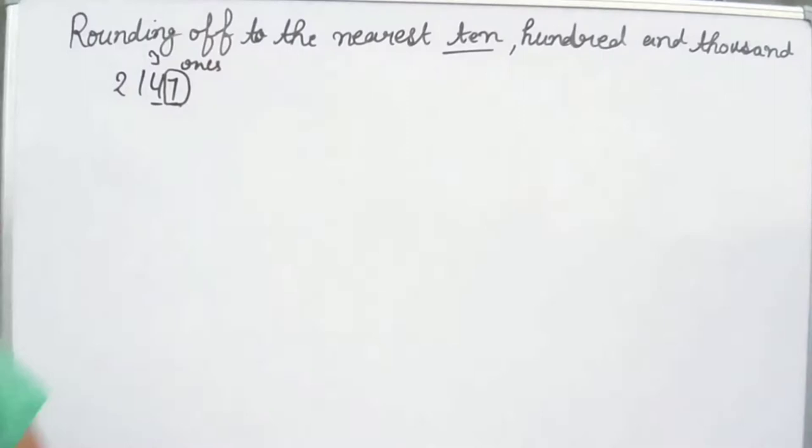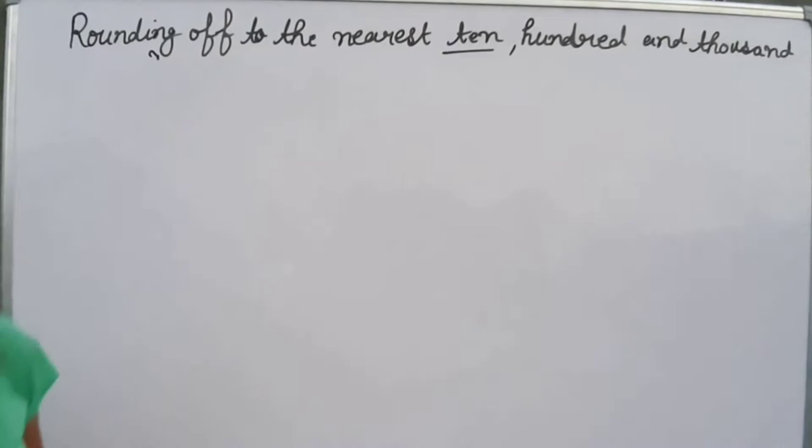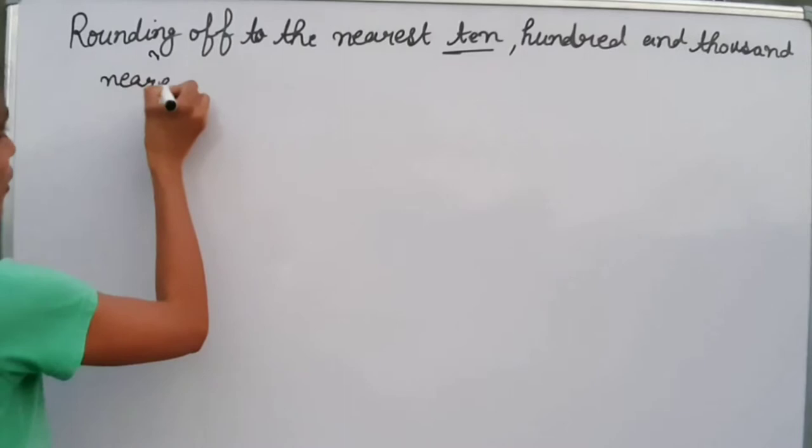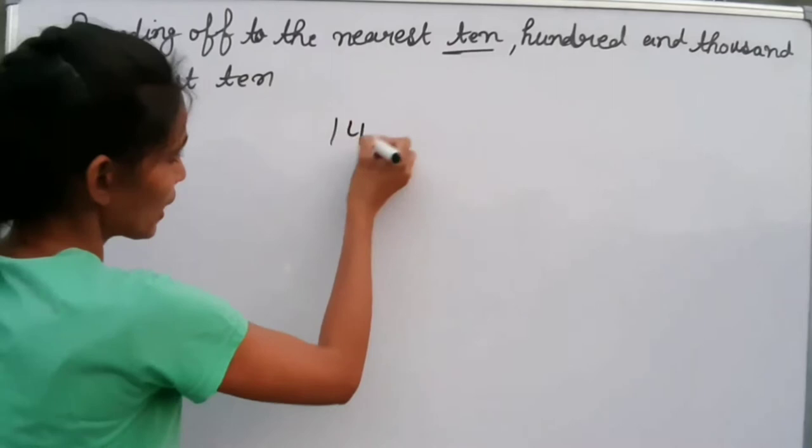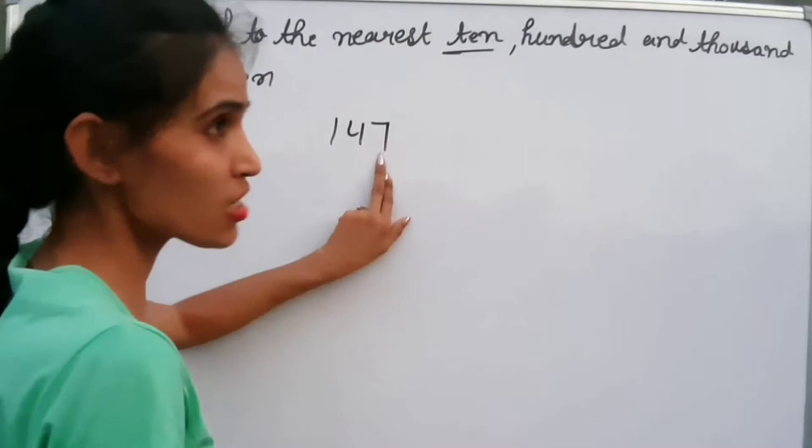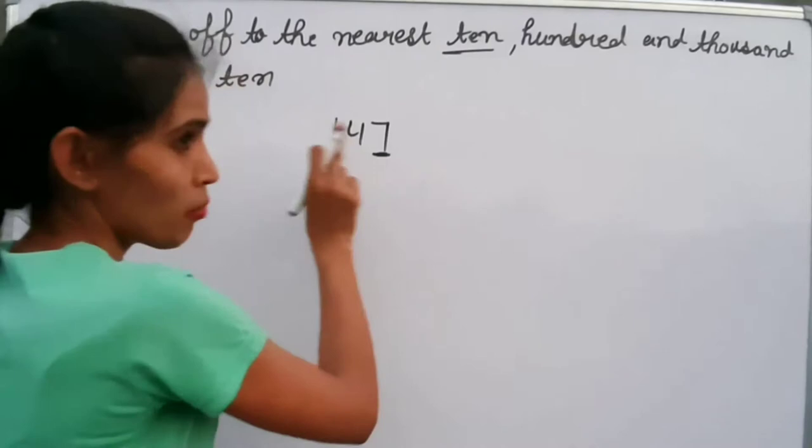Let's take an example of rounding to the nearest ten. We have 147. To round to the nearest 10, we first have to look at the last digit — the ones place. Here, our last digit is 7.